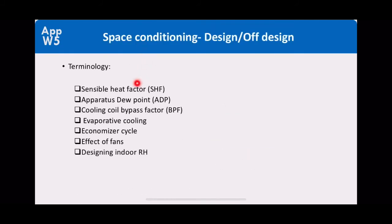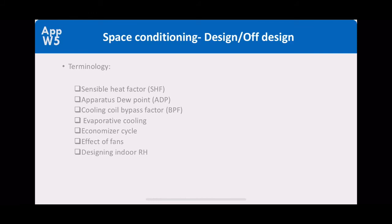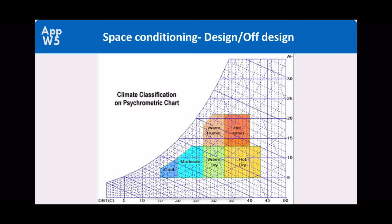Some additional terminology includes: sensible heat factor (SHF), apparatus dew point, cooling quality bypass factor, evaporative cooling, economizer effect, effect of fans, and designing indoors for relative humidity. The comfort zone — roughly 20°C to 26°C — is where the room state must lie to provide acceptable temperature and humidity without being too hot/humid or too cold/dry.